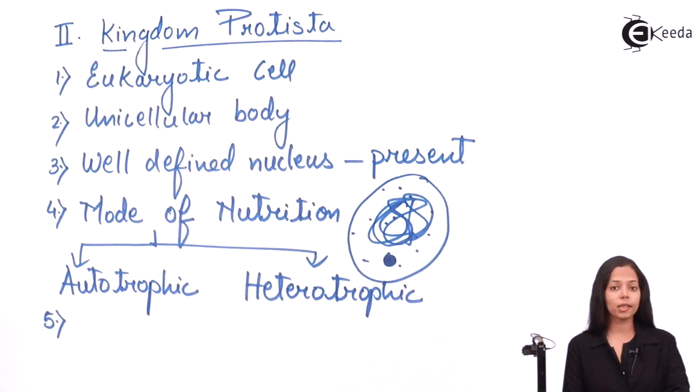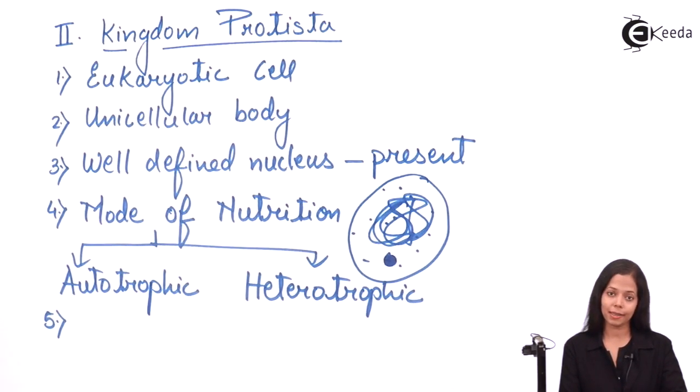Before we study types of protista, we are going to study one important process: mode of reproduction. Reproduction is the process of producing one's own kind. There are two modes of reproduction: asexual and sexual. In case of protista, both processes are carried out.